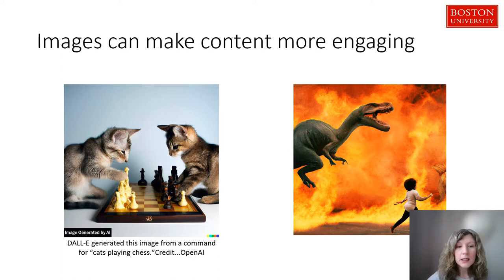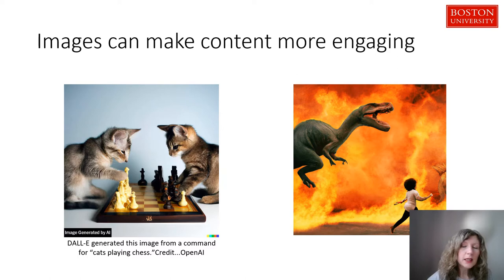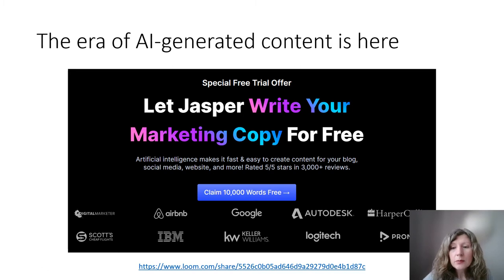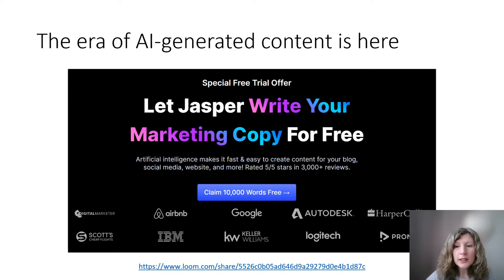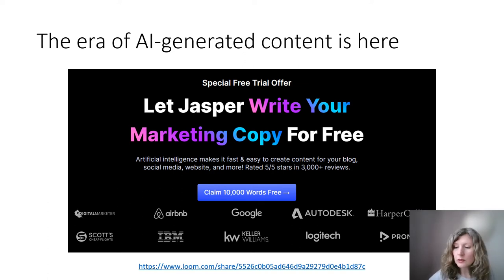These are examples from DALL-E on the left for text-guided generation where the text is 'cats playing chess,' and on the right the text is 'a person being chased by a dinosaur in a fire' — it will generate seemingly pretty much anything you want. There are even companies — Jasper is one of them — that are marketing this as a tool for people to create their own content using AI, for example generating social media posts, blog posts, or marketing content quickly. It will look very realistic, like a human wrote it, but the AI will do it for you.